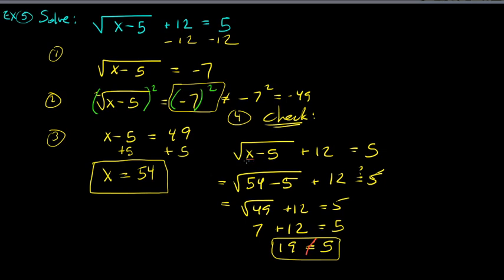Let me verify: 54 minus 5 is 49, square root of 49 is 7, and 7 plus 12 is 19. Everything was done correctly, yet we get 19 not equal to 5. So x equals 54 is wrong. Look back at the very first step — after subtracting 12, we had the square root of (x minus 5) equals negative 7. A square root is always positive, so it can never equal a negative number.